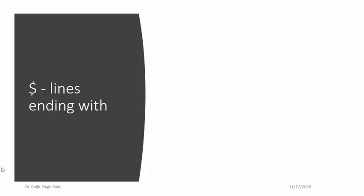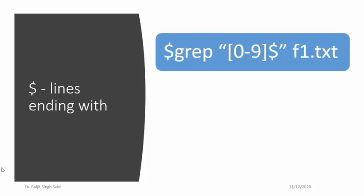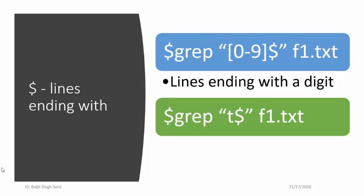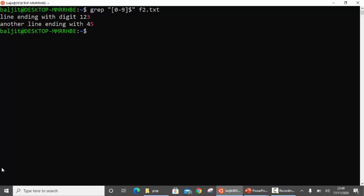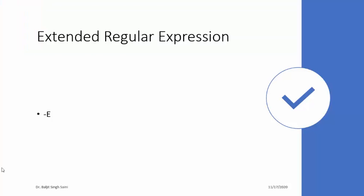The next symbol is the dollar sign, which means lines ending with. For example, if I write grep [0-9]$, this means I am looking for all those lines which end with a digit. Note that the dollar sign is written at the end, whereas the caret sign for beginning of line is the first character. Another example: grep t$ means all those lines ending with t. So if I run this, you can see all those lines which end with a digit.